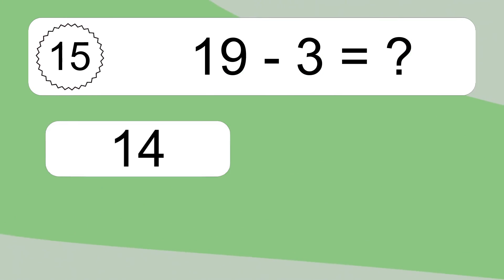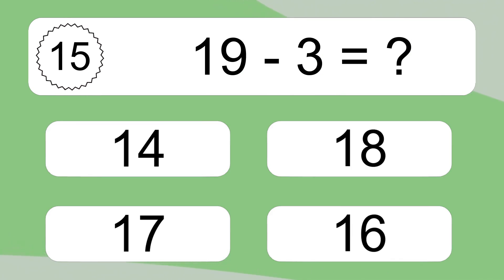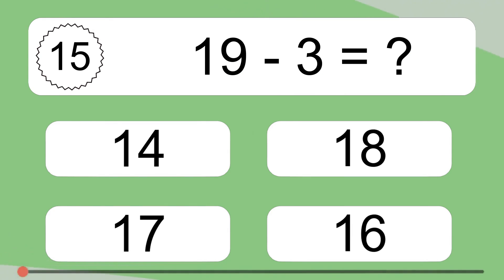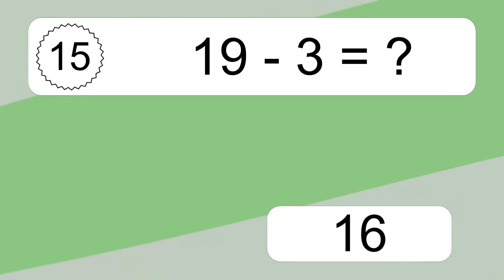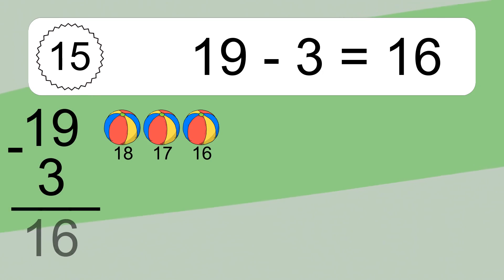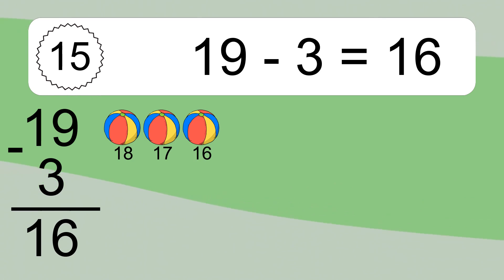19 minus 3 equals what? 19 minus 3 equals 16. Let's count it: 18, 17, 16.